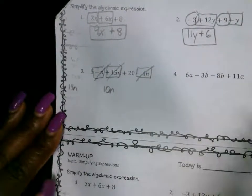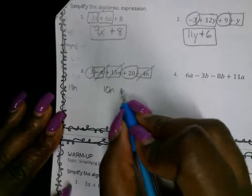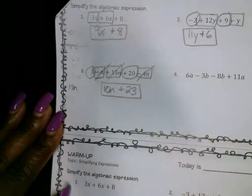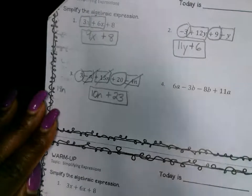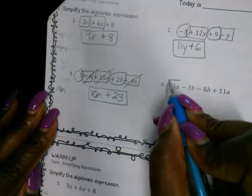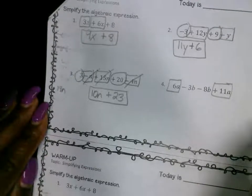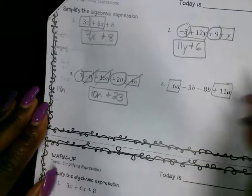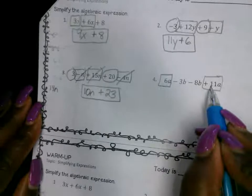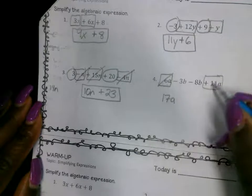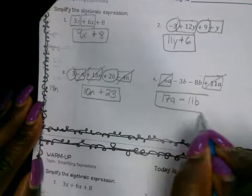What are the other terms that we can combine? 3 and then 20. And what does that give you? Positive. Raise your hand if you got that right. Number 4. What are the like terms there? 6A and then plus 11A. And negative 3B and then these two. What does that give us? What's 6A plus 11A? What's negative 3B minus 8B? Negative 11B. Raise your hand if you got that right.